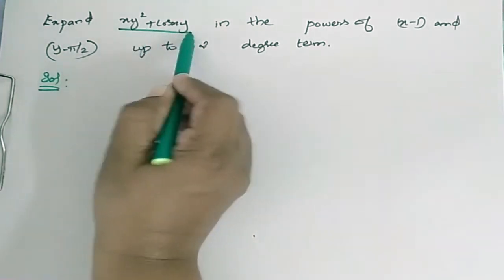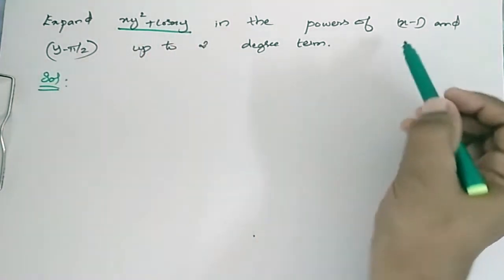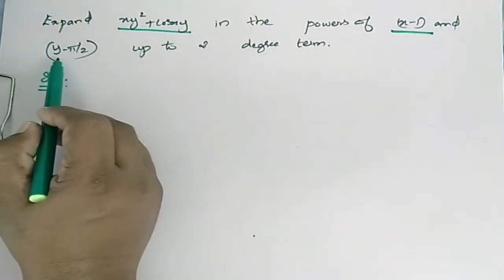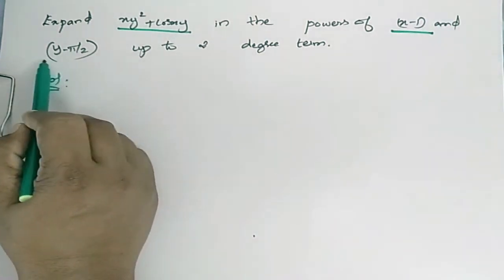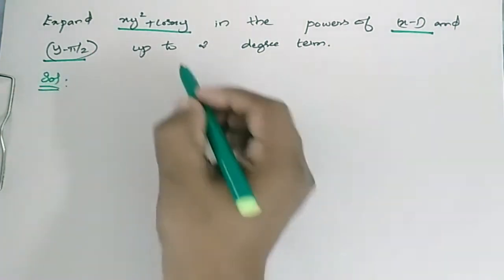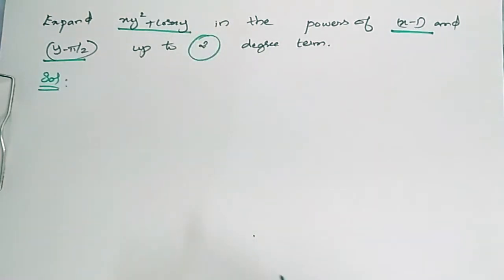Expand xy² + cos(xy) in the powers of (x minus 1) and (y minus π/2) till 2nd degree terms.